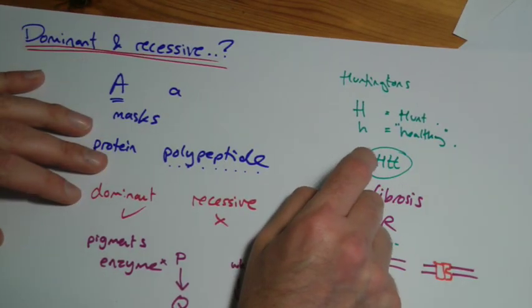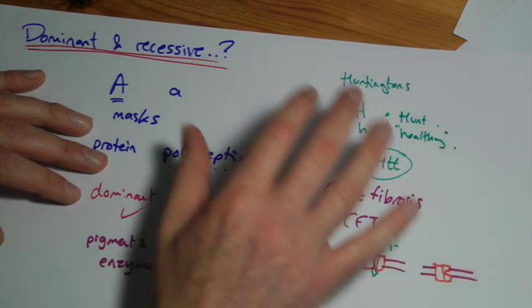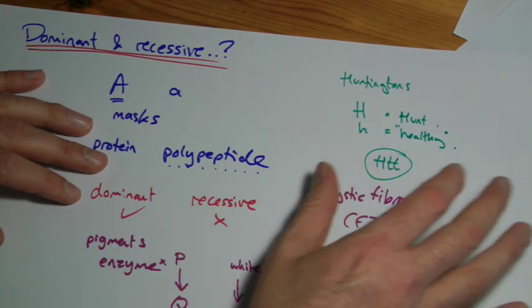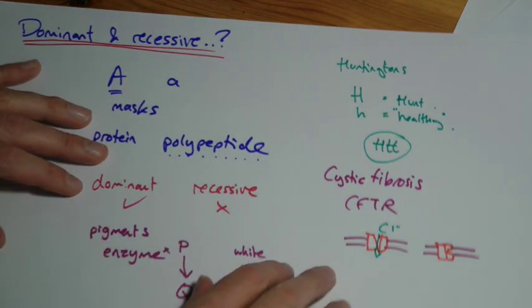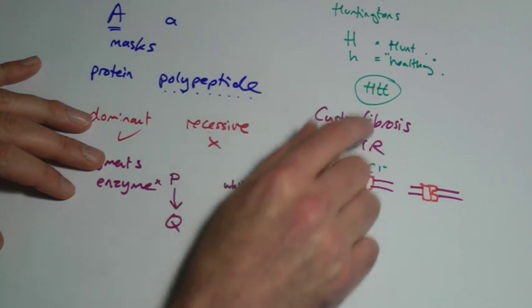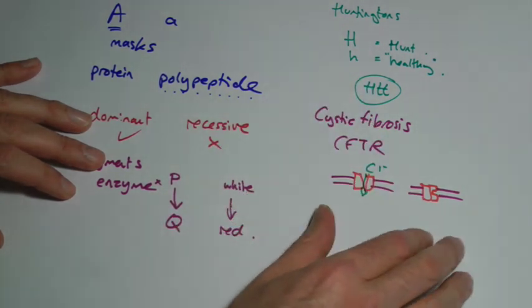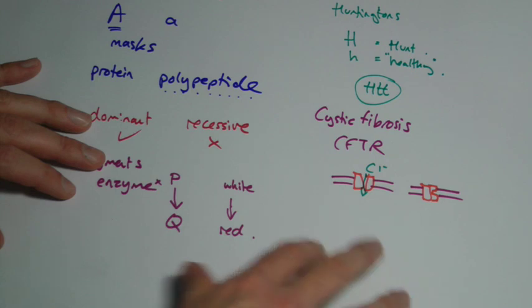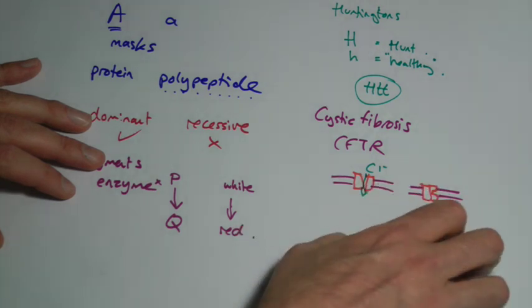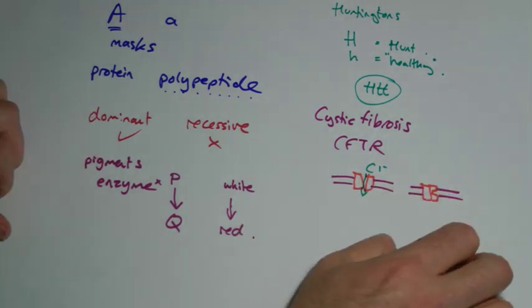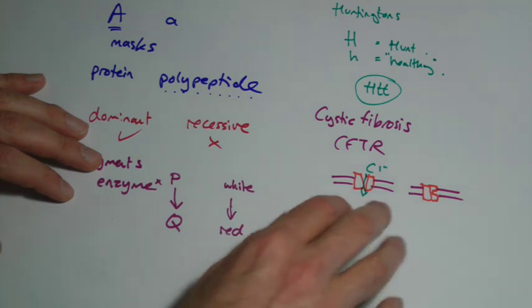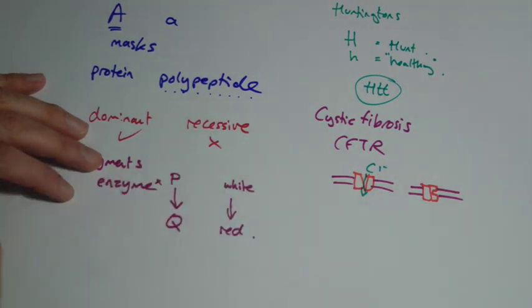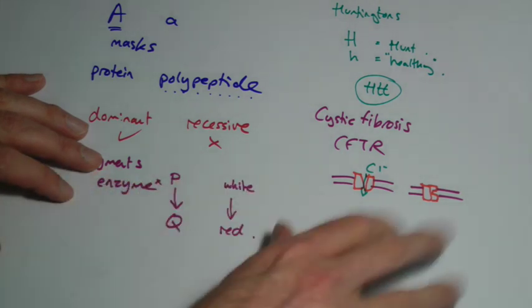Okay, so all we're saying by dominant and recessive here is we're talking about the protein working or not working. In the case of Huntington's, it turns out that the mutated version doesn't do nothing, it actually causes you more problems. And that's why Huntington's is caused by a dominant allele. And I suppose this links back again. You know, what happens if we had a particular gene that made a particular protein and if the mutation actually improved on it? Well, we wouldn't be talking about it really being a problem then. It's just something that we recognize as actually making an improvement in the organism and making it better.